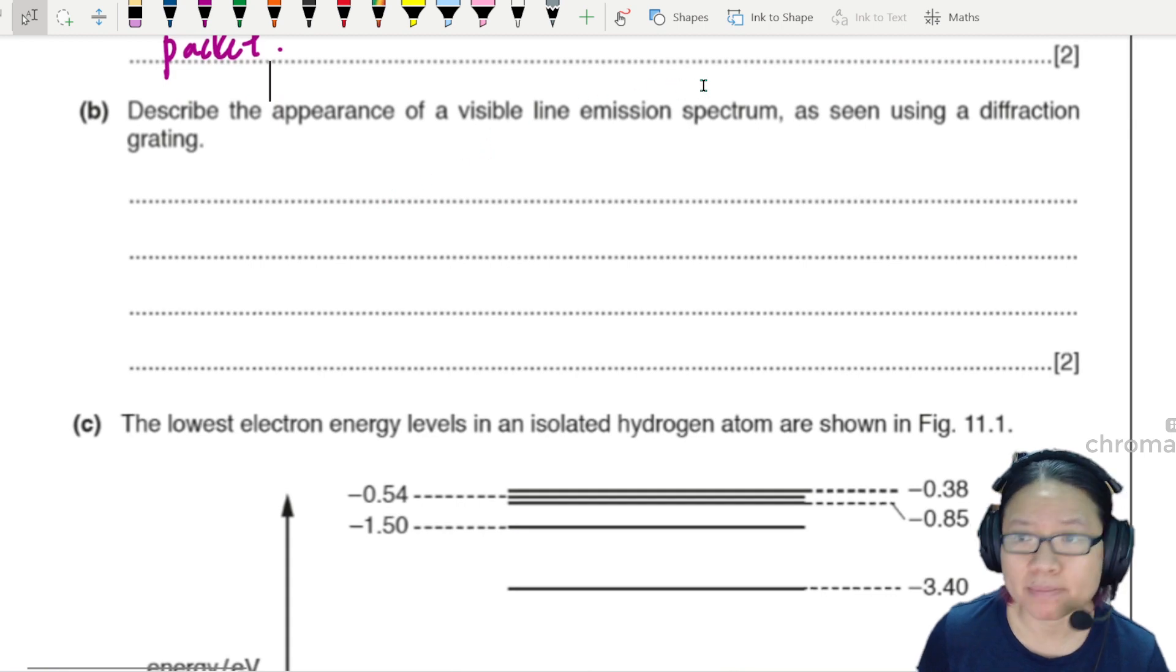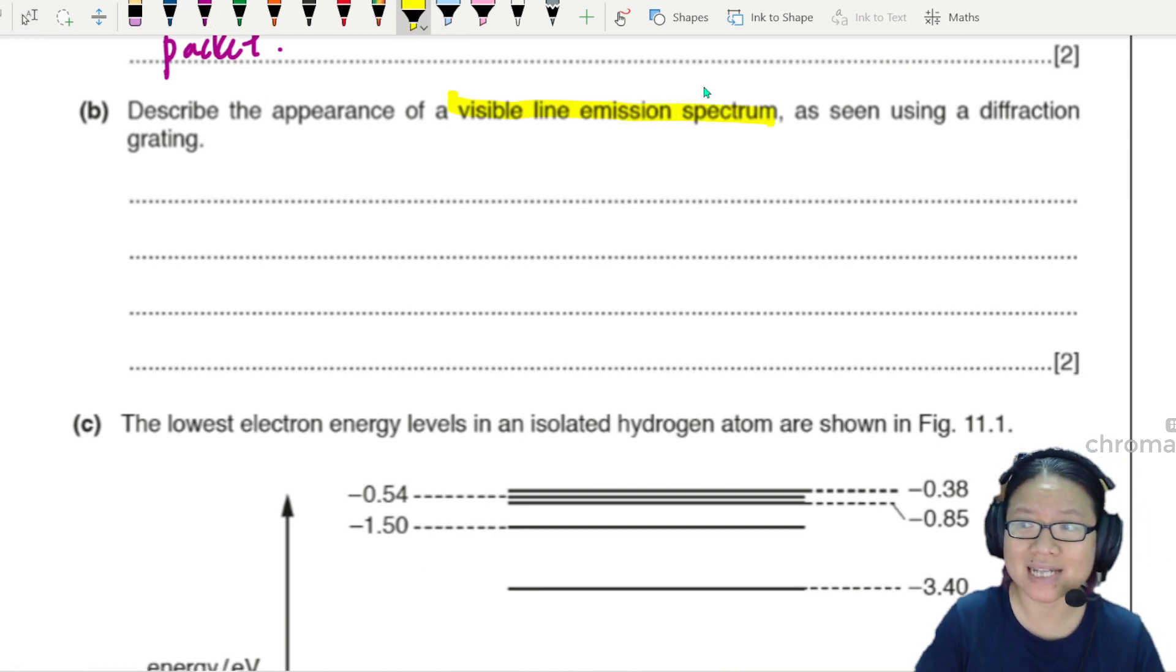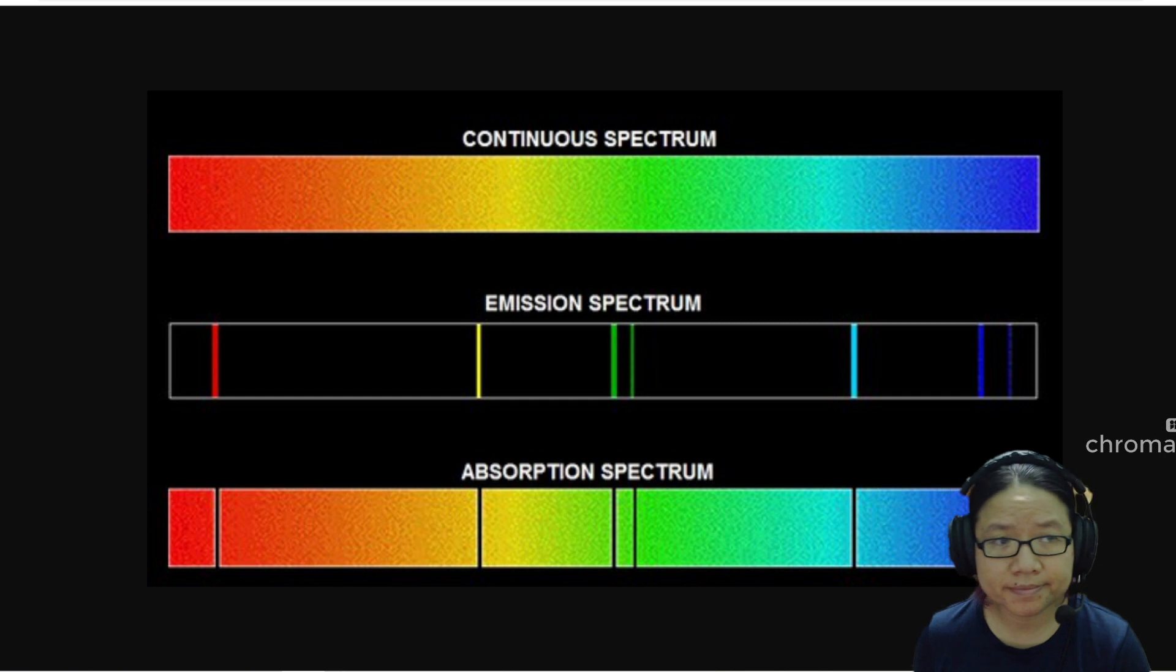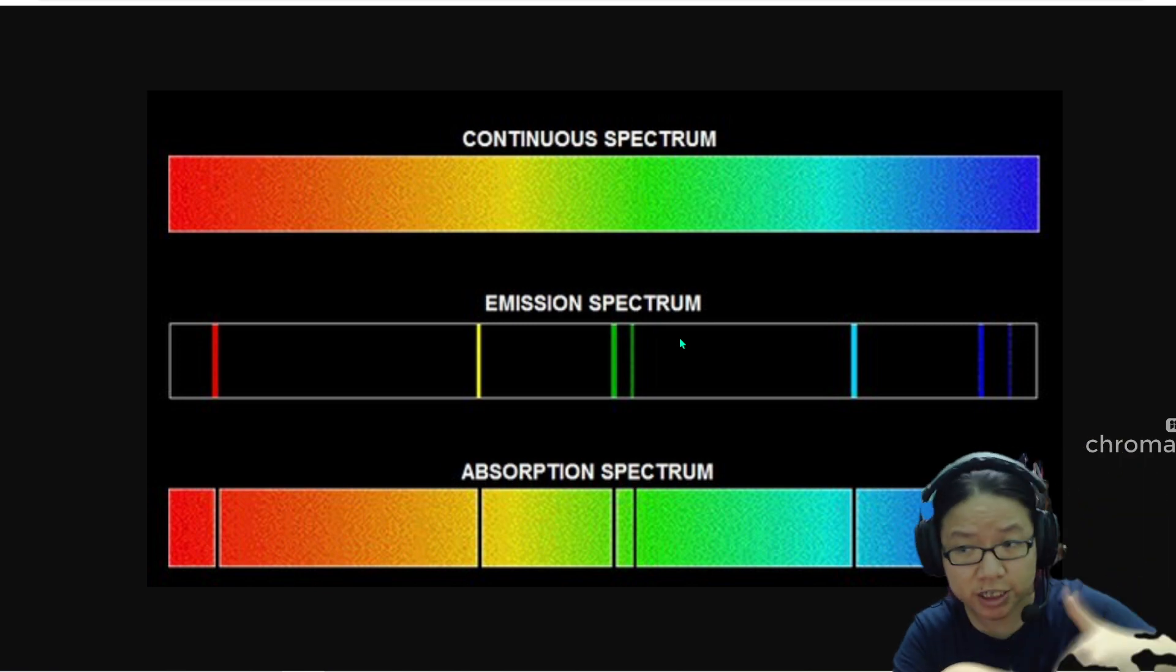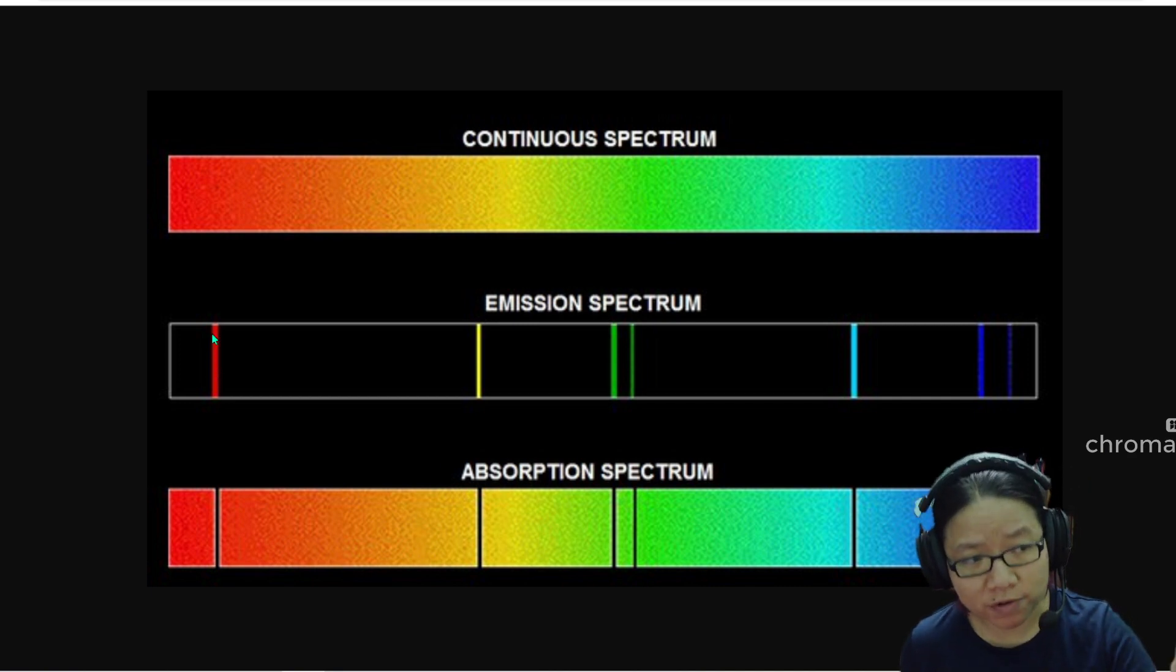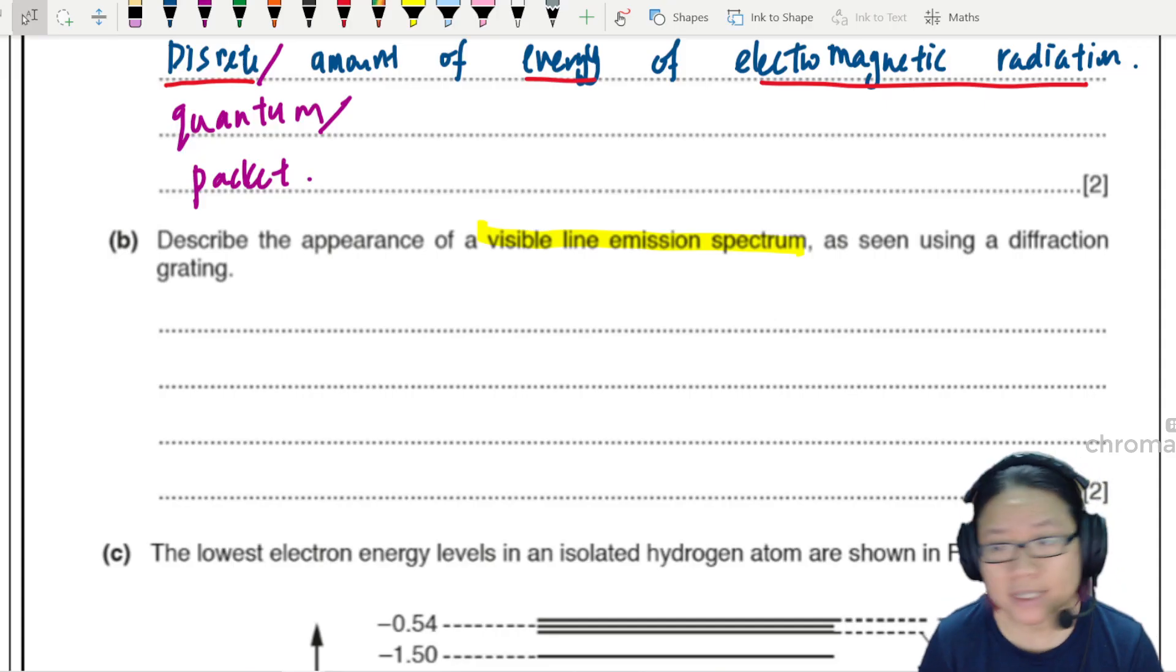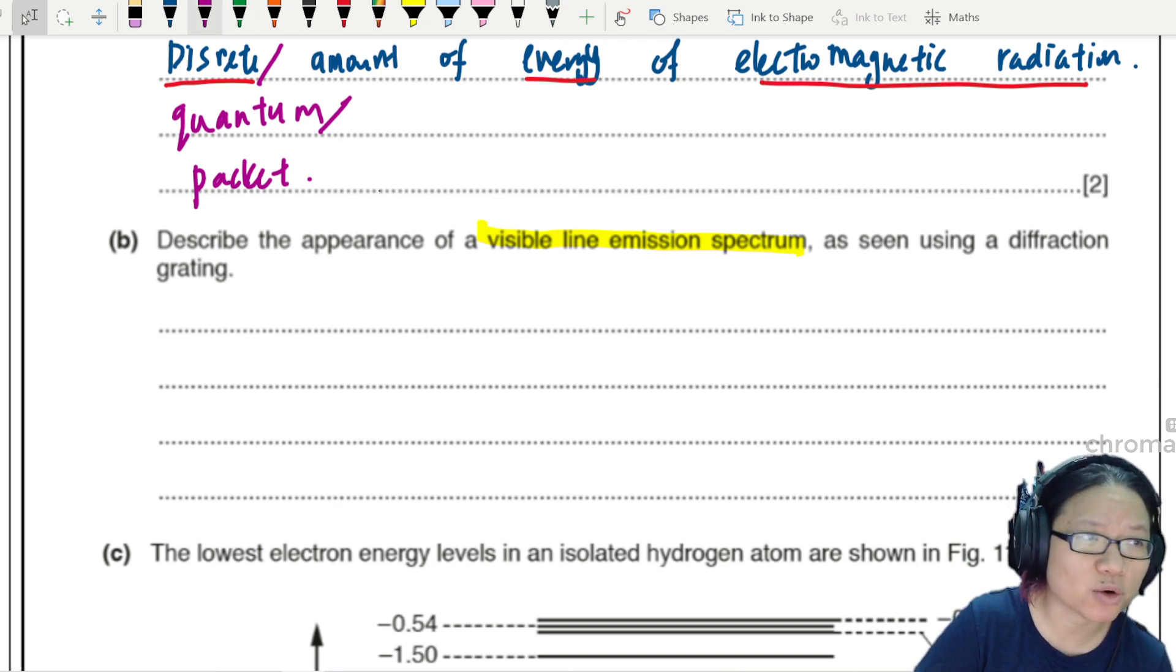Describe the appearance of a visible line emission spectrum as seen using a diffraction grating. The visible line emission spectrum is a dark background with colored lines. Quick reminder: continuous spectrum is rainbow colors, emission is the electron transition to lower energy level releasing photons of certain wavelength, absorption absorbs photons that's why you see black lines. Be careful whether you're talking about emission or absorption.